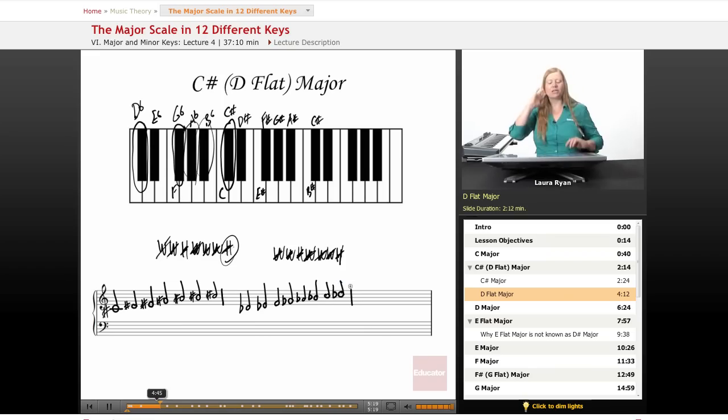So we have two ways of looking at the scale. We have every note sharped. And we have flat, flat, normal, flat, flat, flat, normal. I think that this is a little easier to look at and think about. Generally when I have a scale starting on that note, I go with D flat major.